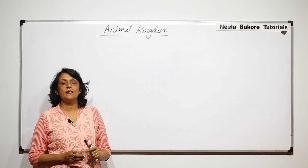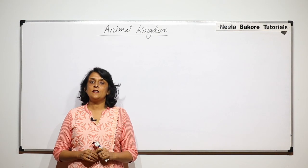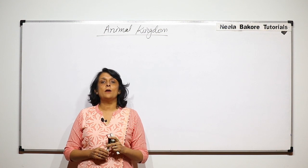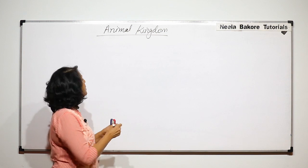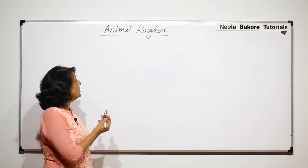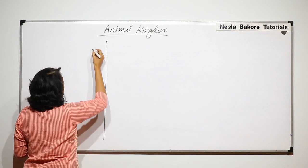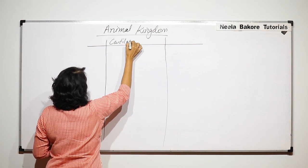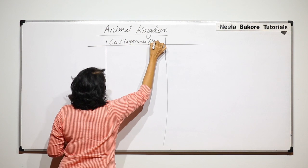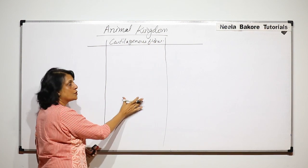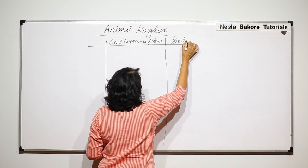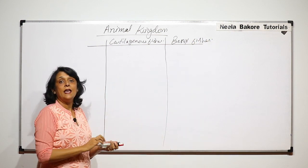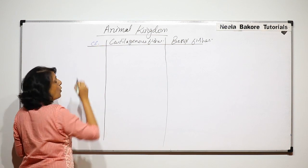In the previous videos we have seen the characteristic features of cartilaginous fishes as well as bony fishes along with the examples. In this part we will talk about a comparative study of cartilaginous and bony fishes and we are going to compare them on certain points. So let us have a tabular arrangement so that all the points are clear, with cartilaginous fishes on one side and bony fishes on the other.